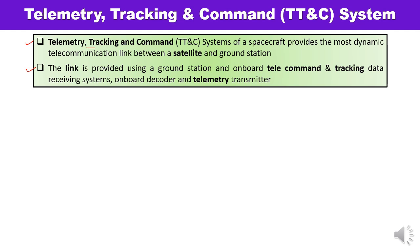One of the important functions is the transmission of housekeeping information and status of the satellite to the ground control station. If there is a requirement to measure angle and range for localization, that is also done. Receiving command signals from the station for keeping operations of onboard equipment is also performed by the TT&C subsystem.